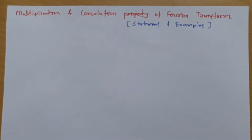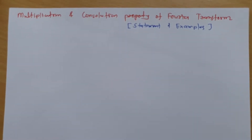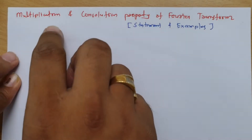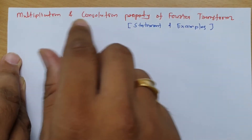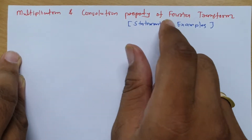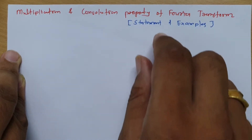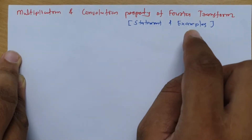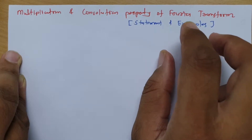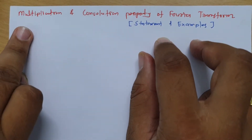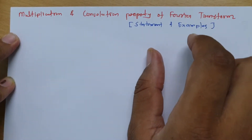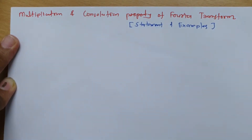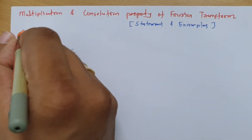Welcome to the signal and system lecture series. In this session I'll explain the property of multiplication and convolution for Fourier transform. First I'll give you the statement and then we will solve some examples so we can understand how to apply this property to solve Fourier transform examples easily. Let us have the first statement.